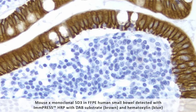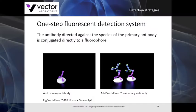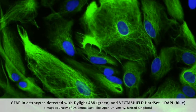In this example, you can see CD3 demonstrated as brown staining in a tissue section detected with a one-step chromogenic detection system. In a one-step fluorescent detection system, following primary antibody incubation, you add a secondary antibody directly conjugated to a fluorophore, which binds to the species of your primary antibody. In this case, astrocytes are detected using a GFAP primary antibody and a fluorescently labeled one-step detection reagent.